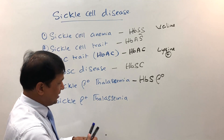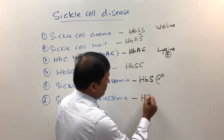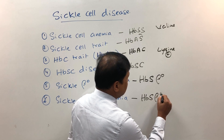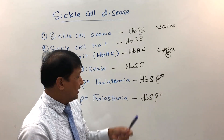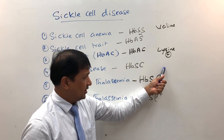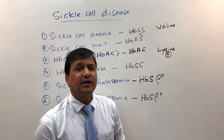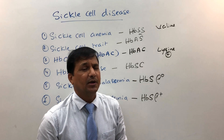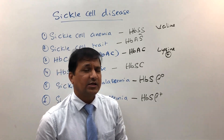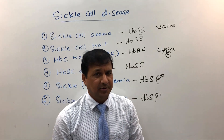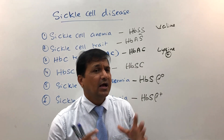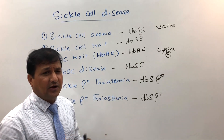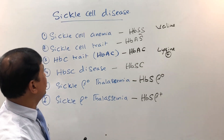In sickle beta-plus thalassemia, one beta globin is of sickle type — glutamate replaced by valine — and the other beta globin synthesis is decreased, unlike sickle beta-0 thalassemia where it is completely absent. Here it is synthesized but in decreased quantity. In this disease, more than 60% of the hemoglobin will be of sickle type, so patients will again have vaso-occlusion, micro-infarction, splenomegaly, and related clinical signs and symptoms.